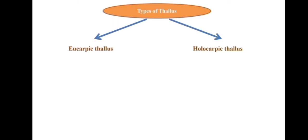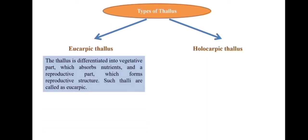Thallus are divided into two types on the basis of degree of differentiation. The first is eucarpic thallus and the second is holocarpic thallus. In eucarpic thallus, higher differentiation can be observed — one part of the thallus is converted into a vegetative part which helps in absorption of nutrients, whereas another part converts into a reproductive part helpful in production of spores and reproductive structures. The example of eucarpic thallus is Pythium aphanidermatum. In eucarpic thallus, both vegetative and reproductive structures can be found in a single thallus.